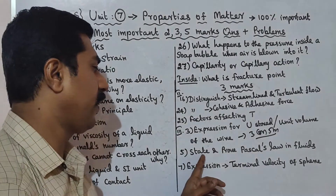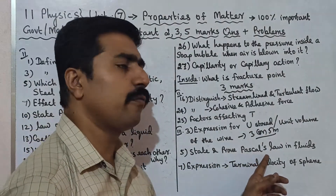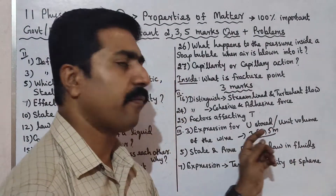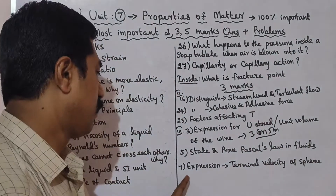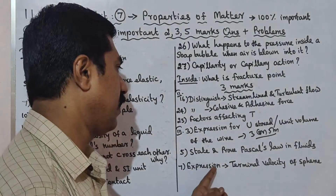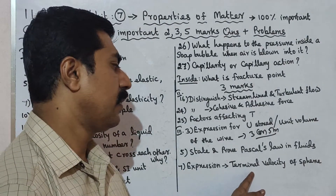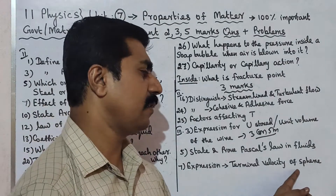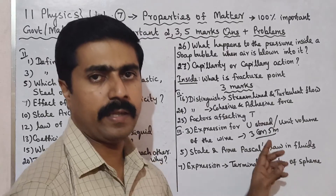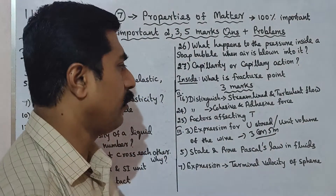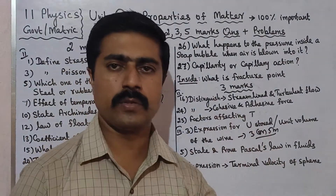Question number 5 — state and prove Pascal's law in fluids. Question number 7 — expression for terminal velocity of a sphere in a liquid. These are 3-mark questions.